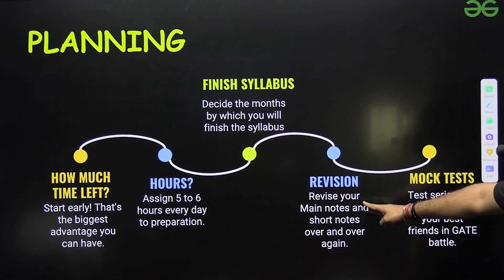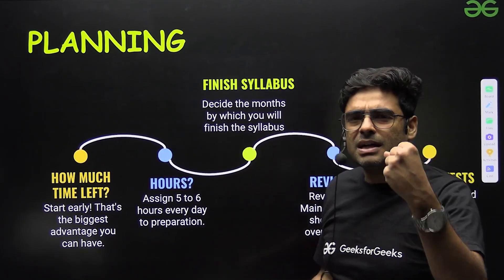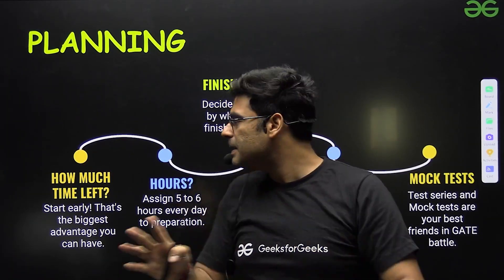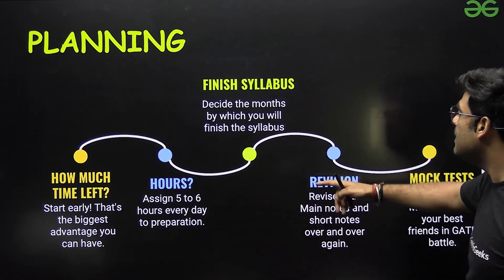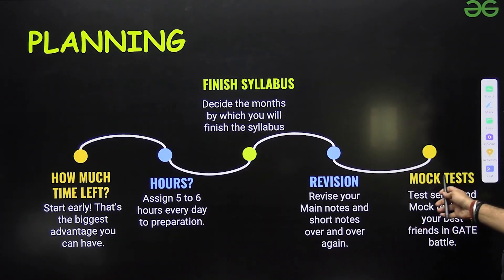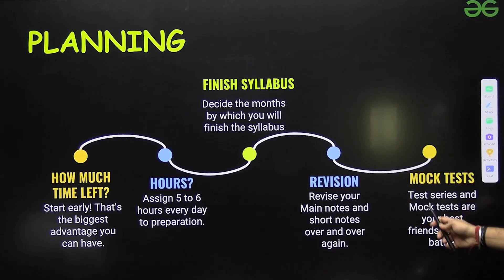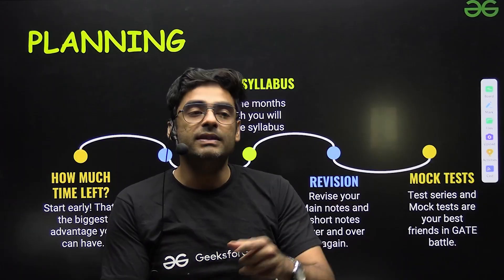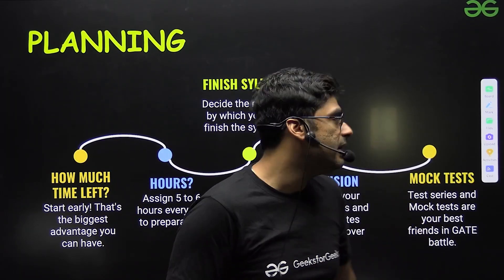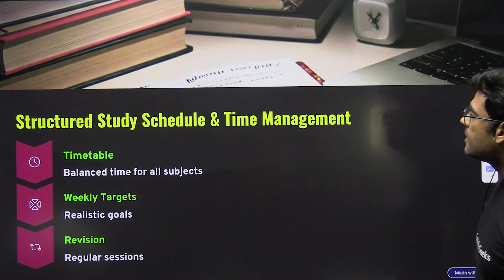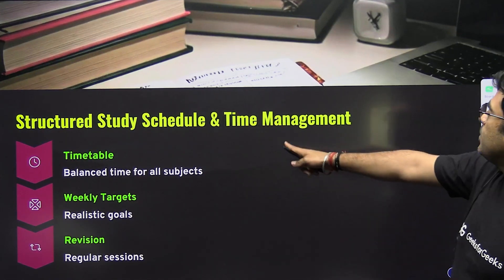Revision is key because the syllabus for any branch — mechanical, civil, CS, IT — is very lengthy. So prepare short notes and then give mock tests to check how much you are able to solve in a real GATE environment. A structured study schedule and time management are essential: make a timetable, balance time for all subjects, and set weekly targets — realistic goals that you can actually cover.